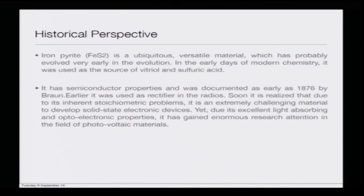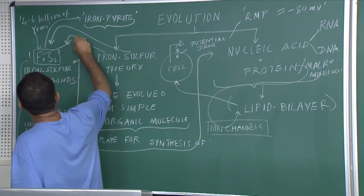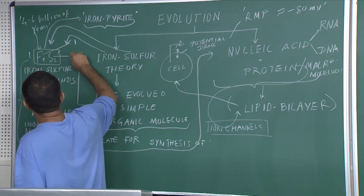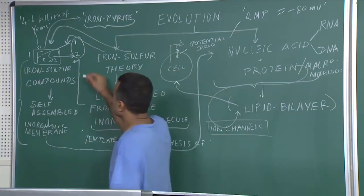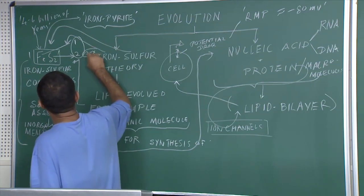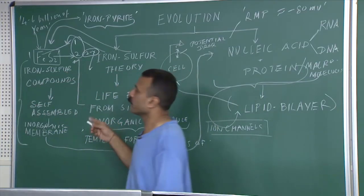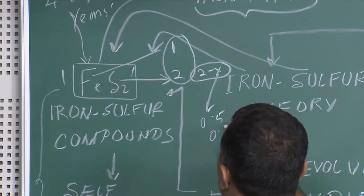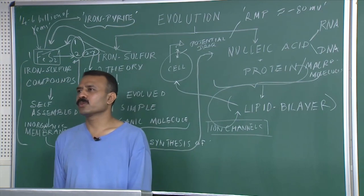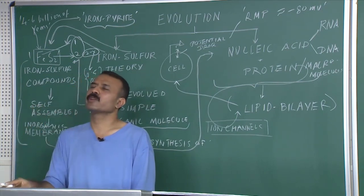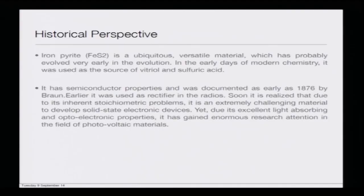But soon it was realized that it has an inherent stoichiometric problem. What does that mean? Whenever we write FeS₂, our assumption is that there is one molecule of iron and two molecules of sulphur. But in real life that does not happen — it is always FeS₂₋ₓ, where x could be anything: it could be 0.5, 0.1, 0.2, and so forth. This is the problem with these kind of molecules — there is always a defect; it is never stoichiometrically balanced.